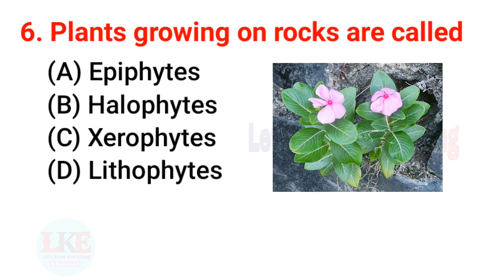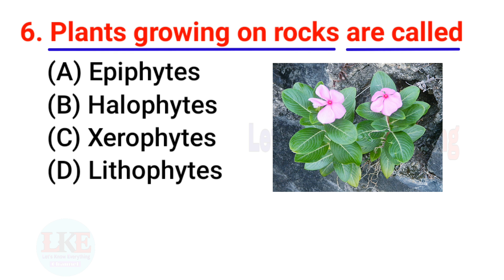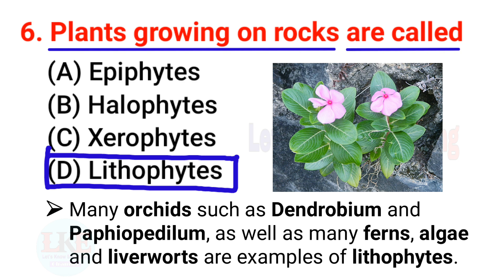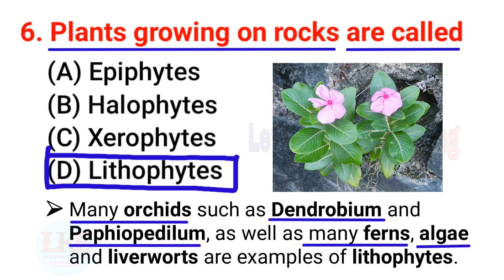Question number 6: plants growing on rocks are called lithophytes. Many orchids such as Dendrobium and Paphiopedilum, as well as many ferns, algae, and liverworts, are examples of lithophytes.